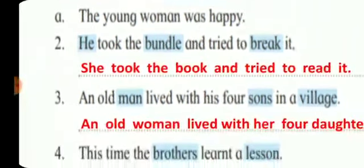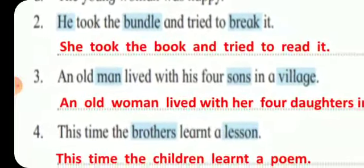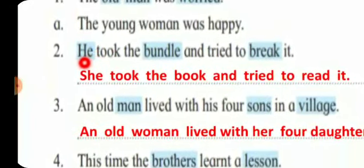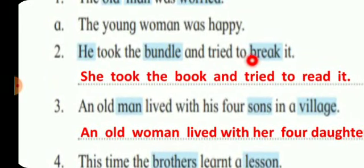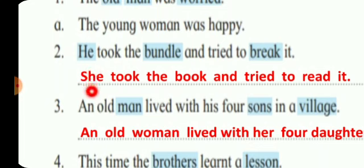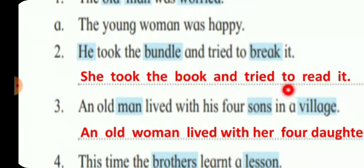Now the next one is: 'She took the bundle and tried to break it.' We have to change the words 'break,' 'bundle,' and 'he.' So instead of 'he' we write 'she,' instead of 'bundle' we write 'book,' and instead of 'break' we write 'read' — 'She took the book and tried to read it.'